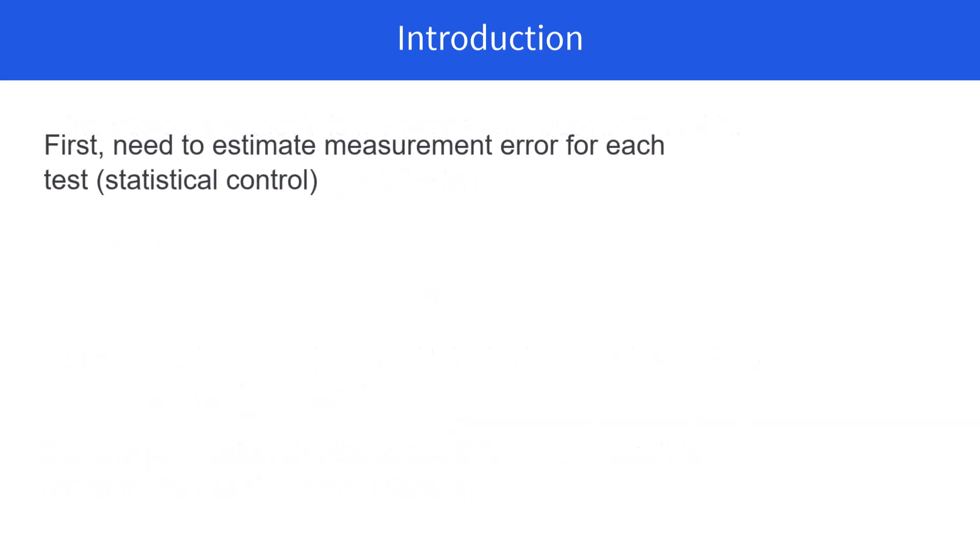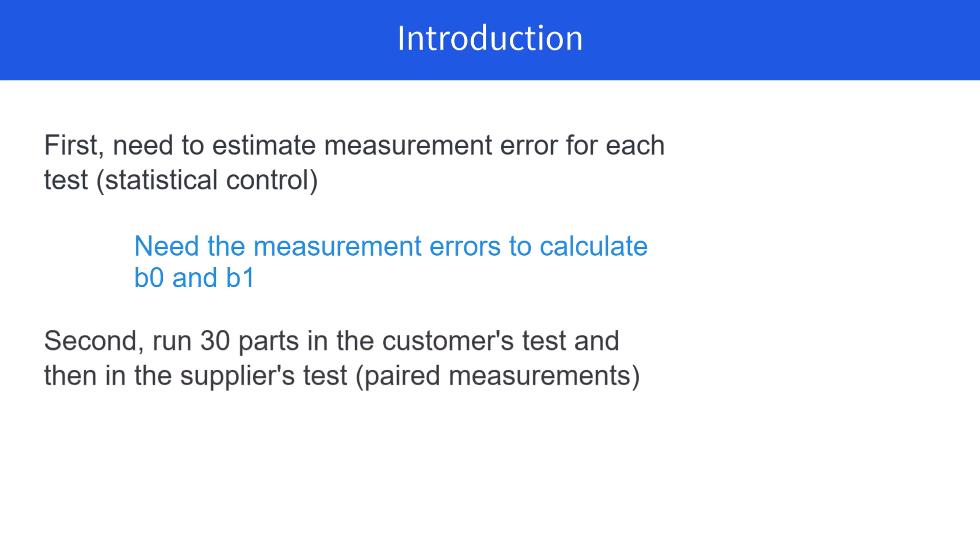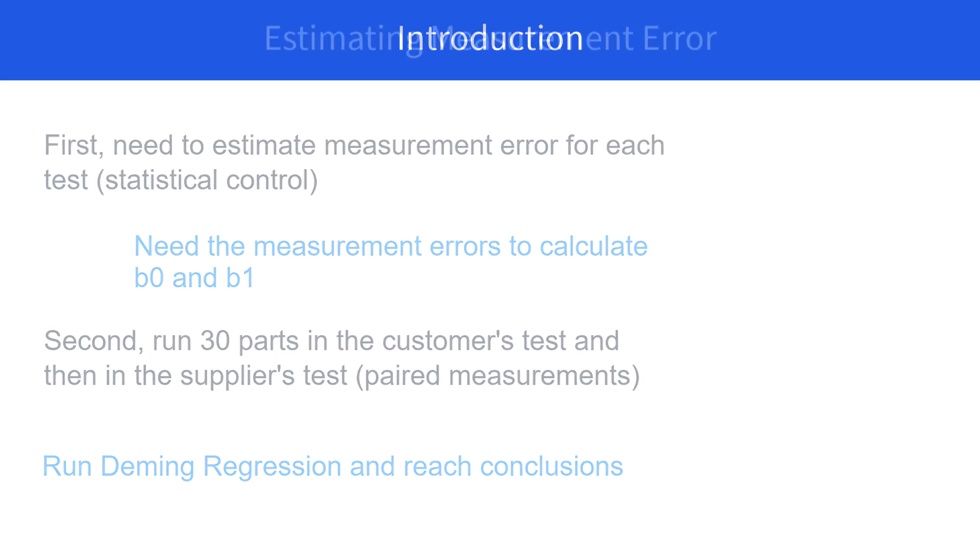First we need to estimate the measurement error for each test to make sure it's in statistical control. We need the measurement errors to calculate B0 and B1. Then we're going to run 30 parts in the customer's test and those same 30 parts in the supplier's test, called paired measurements. Then we're going to take that data, run the Deming regression, and reach our conclusions.